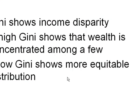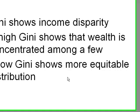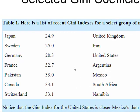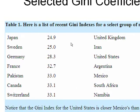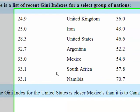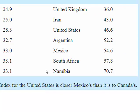Here, I have a few selected Gini coefficients. You can see that in Japan and Sweden, the low Gini coefficient means that income is more equitably distributed. However, in the two African countries shown here, income seems to be concentrated among a few wealthy individuals.